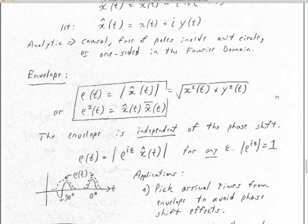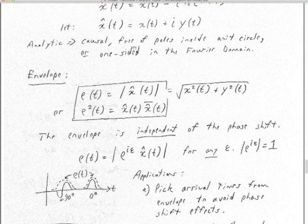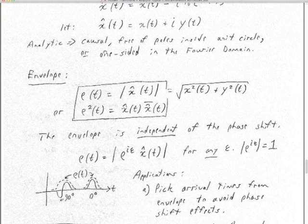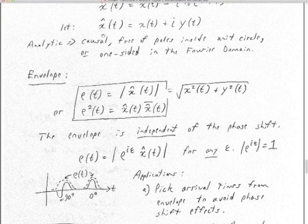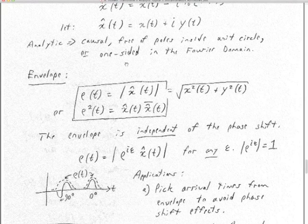Why do we use the term analytic? It's still causal — free of poles inside the unit circle — and also one-sided in the Fourier domain, which we guaranteed by multiplying by that signum function. If it had poles inside the unit circle it would blow up, but this is a physical signal with limited energy. That's part of what it means to be analytic — we can apply analysis to it.